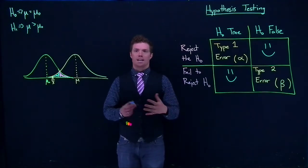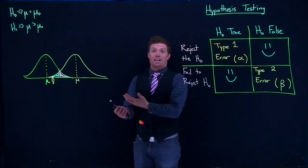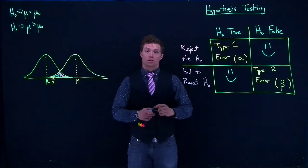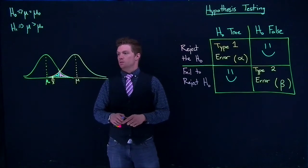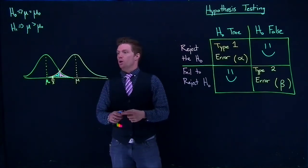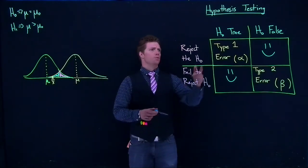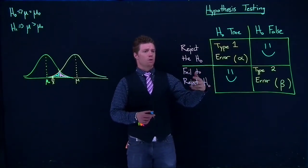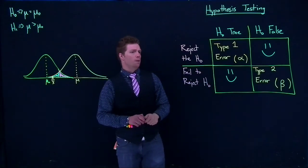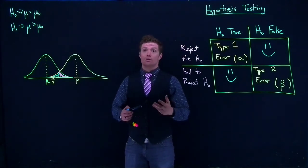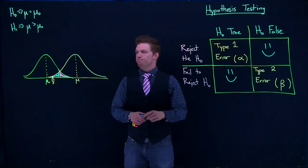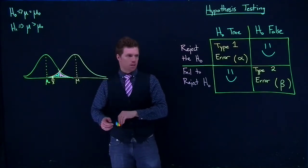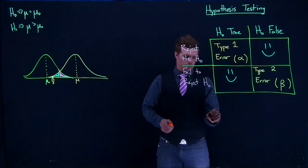There are ways to manipulate the sizes of beta and alpha. The best way to handle both, if you're really worried about it, is to increase your sample size. Increasing your sample size will decrease how often you are going to be rejecting the null hypothesis when the null hypothesis is actually true, and decrease how often you are going to be failing to reject the null hypothesis when the null hypothesis is actually false. We can minimize both errors by increasing our sample size. Those are the differences between Type 1 and Type 2 errors.